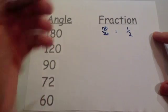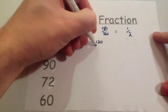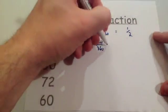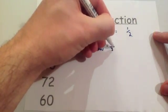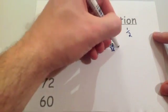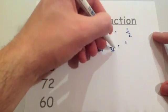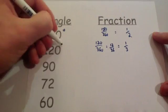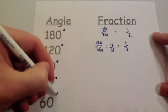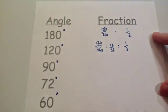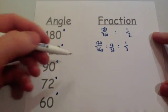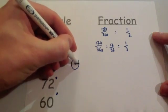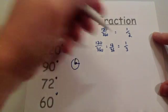120 degrees. Well, 120 degrees out of the 360. If you divide both by 10, you would get 12 over 36. And if you divide both of those by 12, 12 goes into 12 once and 12 goes into 36 three times. So if you ever see a 120 degree angle, then that would be a third of the pie chart. A 90 degree angle, we've seen that before. If you had a circle or a pie chart with a 90 degree angle, you know that's going to be a quarter.